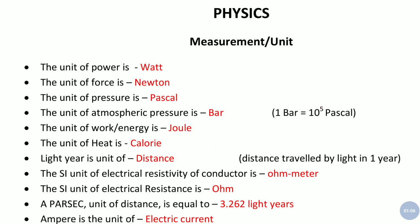The unit of atmospheric pressure is bar, and just remember that one bar is equal to 10 to the power 5 Pascal. The unit of work or energy is joule, it can be kilojoule also. Unit of heat is calorie.